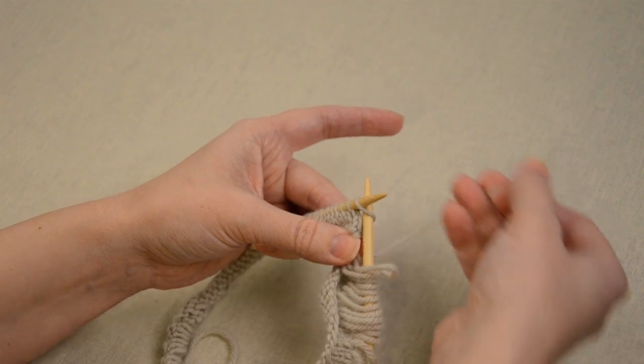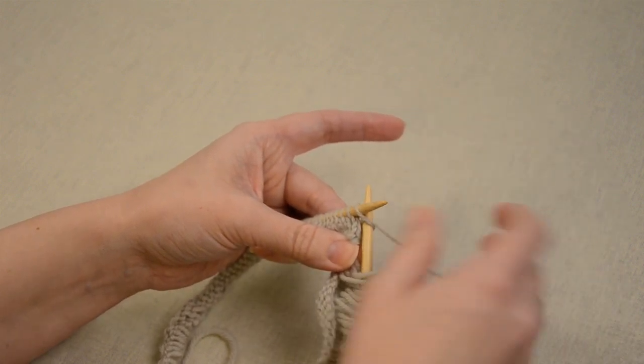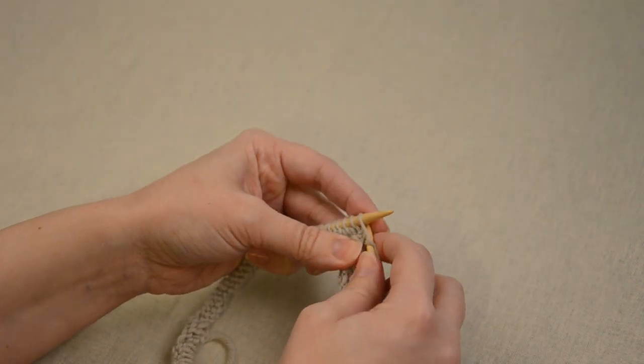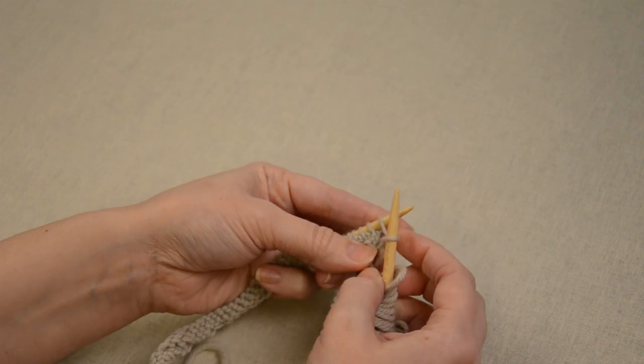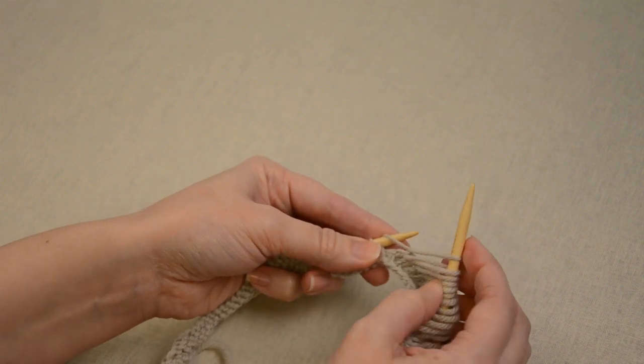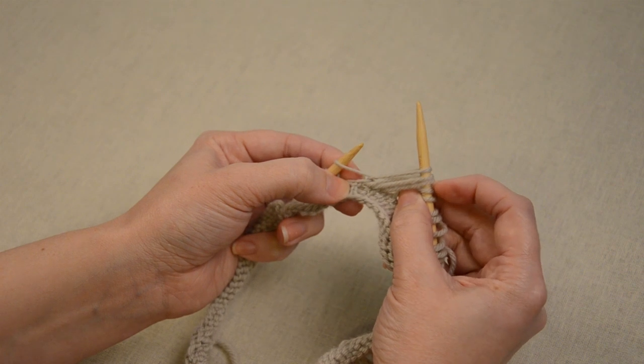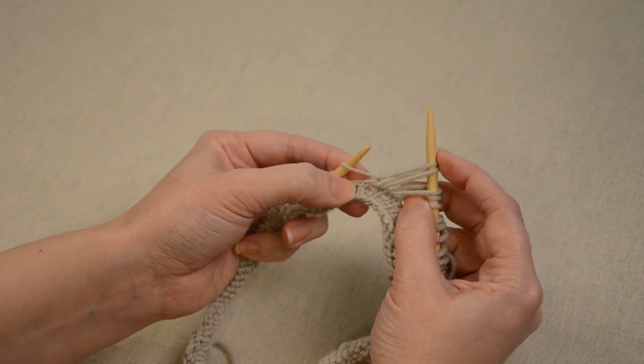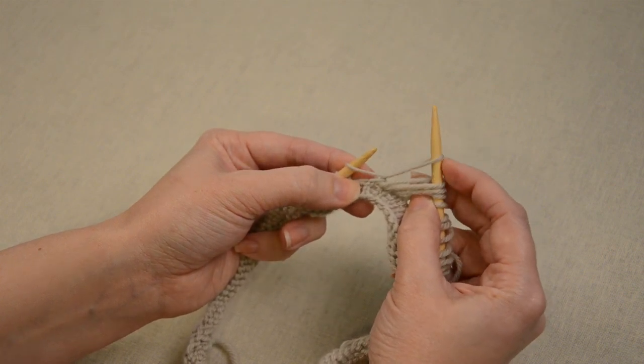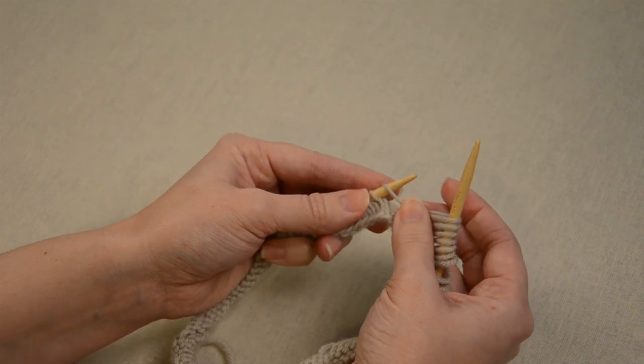But we're going to do it in the same way we did that previous one, as if to knit and pull up a loop and elongate the stitch. You're going to just make it as long as you did the previous stitch so they're approximately the same length, and then pinch that stitch just as you did before.